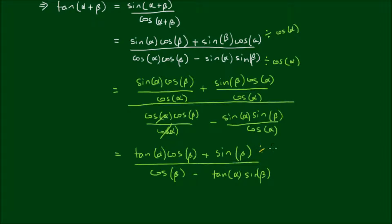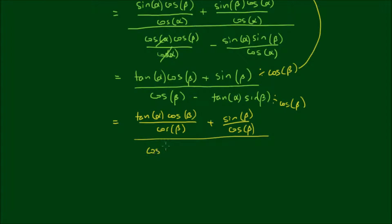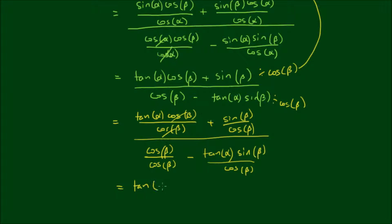Now I can divide the top and bottom by cos beta — and of course I could have combined these two steps together but I separated them for clarity. So we have tan of alpha times cos beta over cos beta plus sin beta divided by cos beta, all over cos beta divided by cos beta minus tan alpha times sin beta divided by cos beta. Simplifying this, the cos beta terms cancel out and sin beta divided by cos beta equals tan beta.